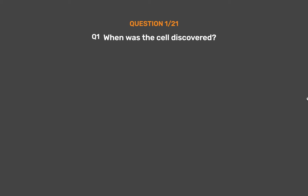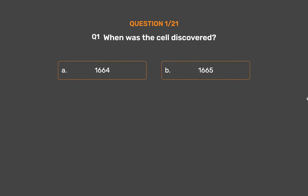Question No. 1: When was the cell discovered? Option A: 1664. Option B: 1665. Option C: 1666. Option D: 1667.